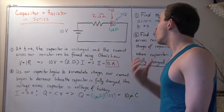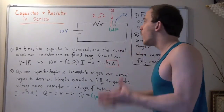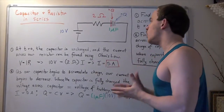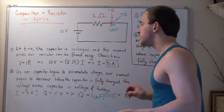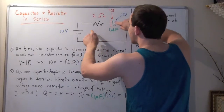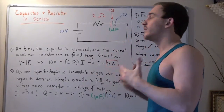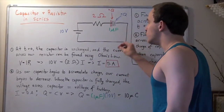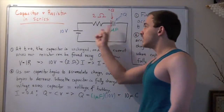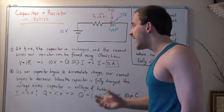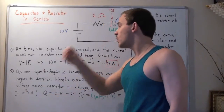What happens when our capacitor is fully charged? When our capacitor is fully charged, the voltage on the capacitor is the same as the voltage of our battery. There is no difference in electric potential — no difference in voltage between those two points. That means there is no electromotive force to push our electrons, so electrons stop moving. If no electrons are moving through our resistor, our current at that unknown time, when our capacitor is fully charged, must be zero amps.